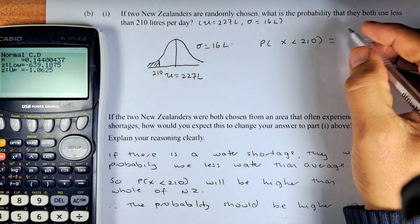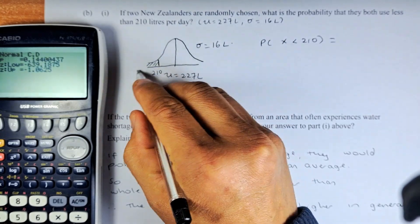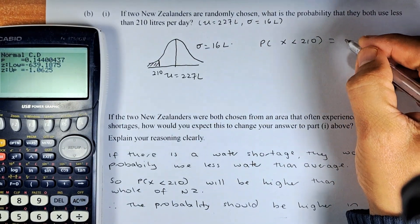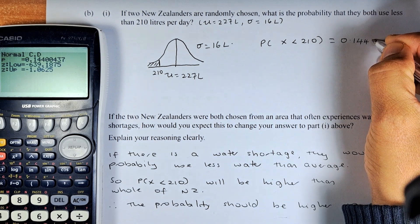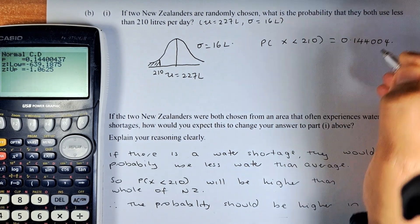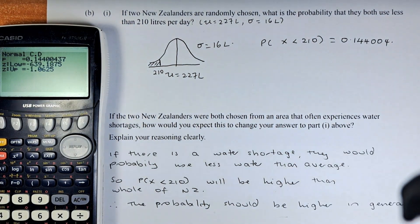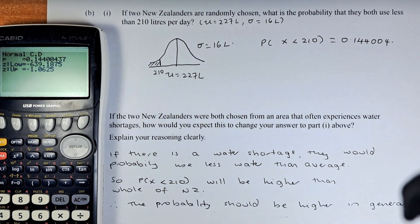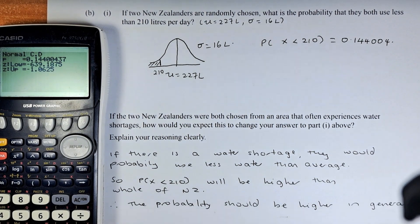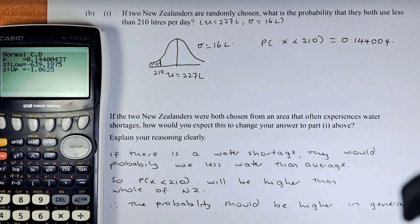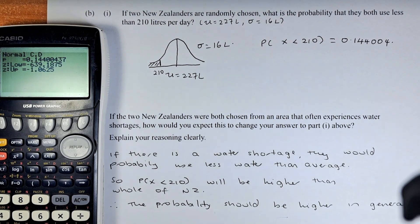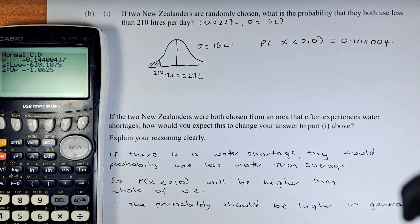And the answer probability of X less than 210 is going to be 0.144004. So the question asks you, what is the probability for two days? If two New Zealanders are chosen randomly, what is the probability that they use less than 210?